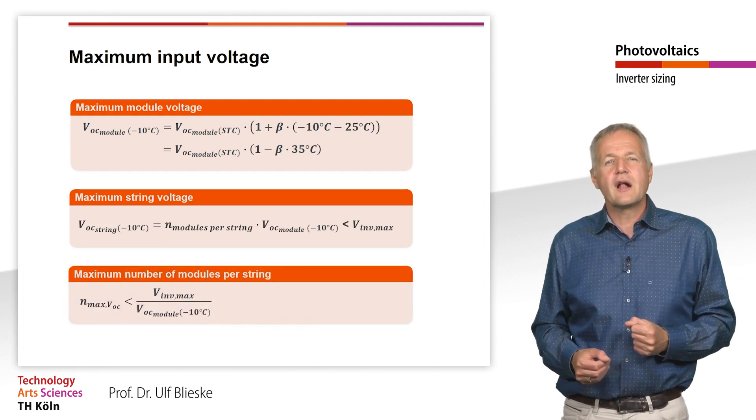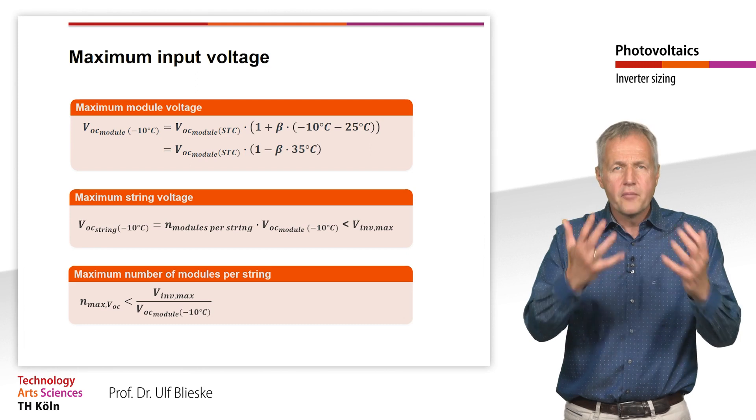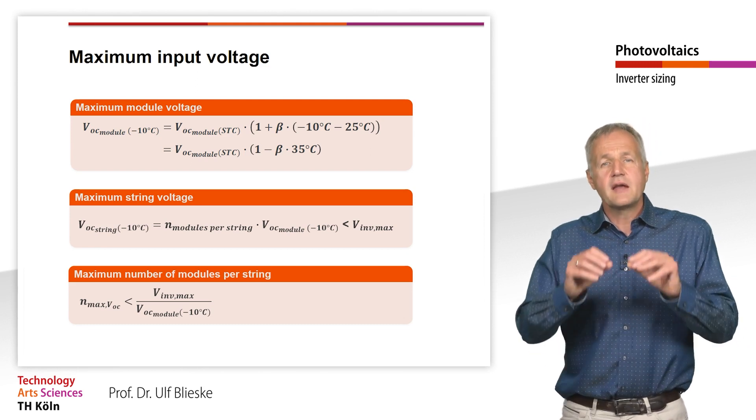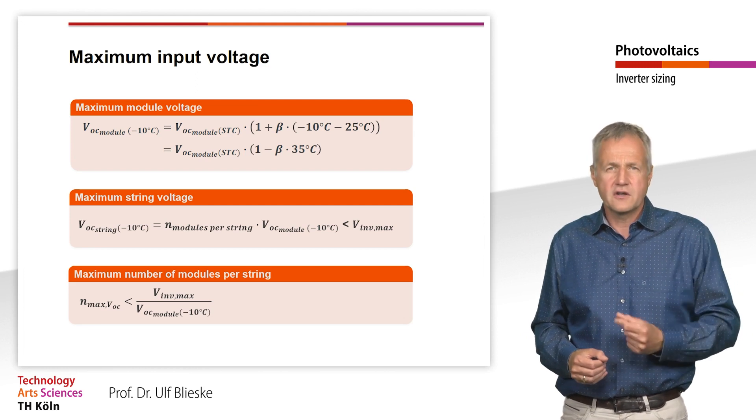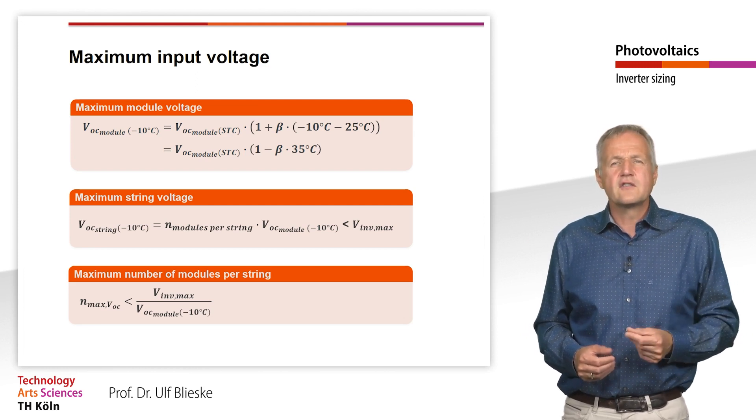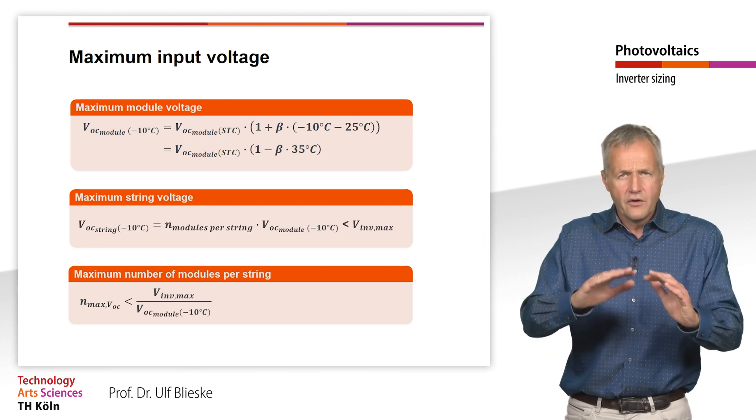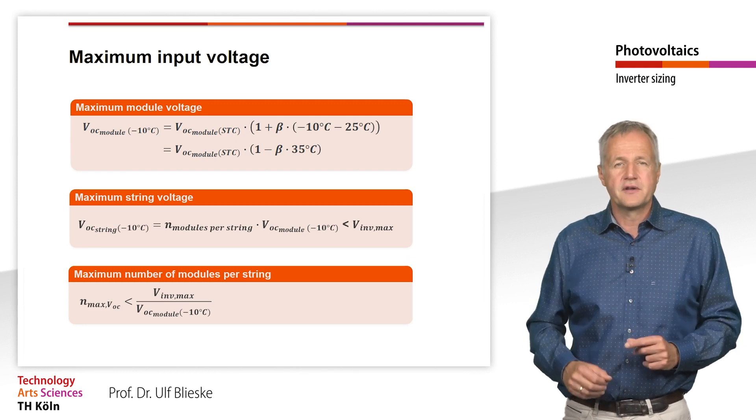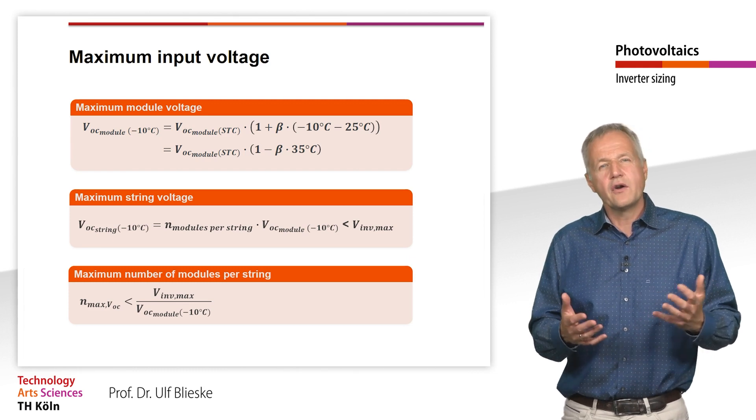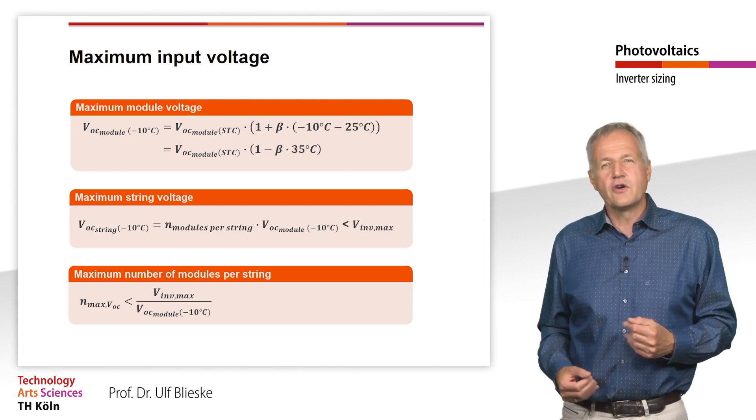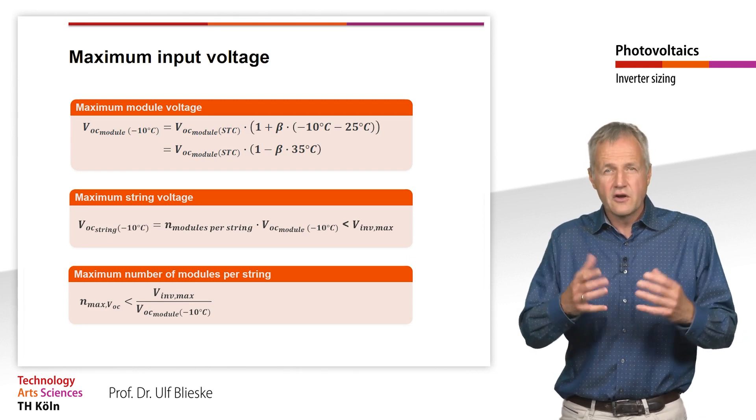Conversely, we can also calculate the maximum allowed number of modules that then can be connected together in a string for a particular inverter. This value is of course always rounded down to the nearest whole number. It may then be necessary to leave out one or even more modules in order to be able to use a particular inverter.